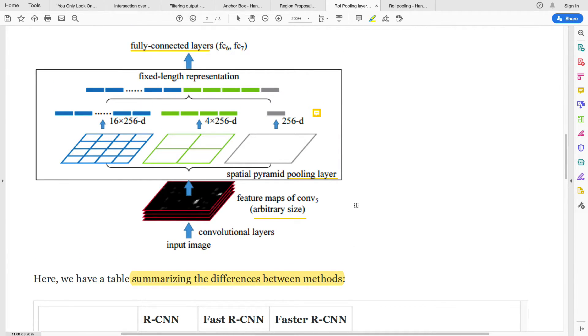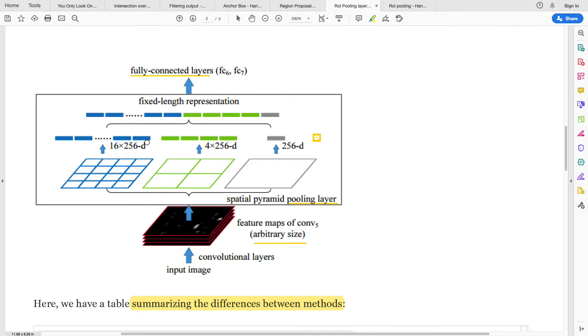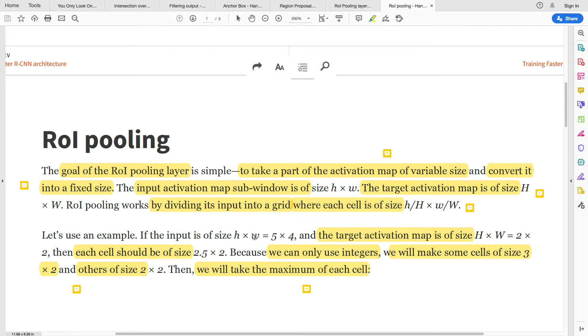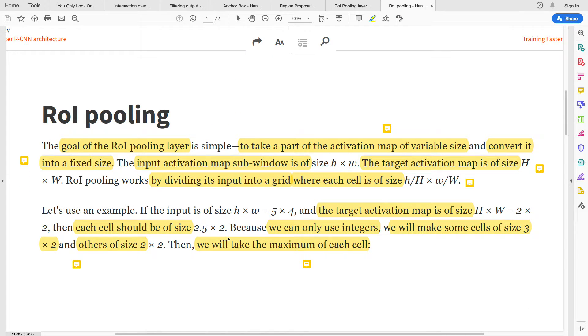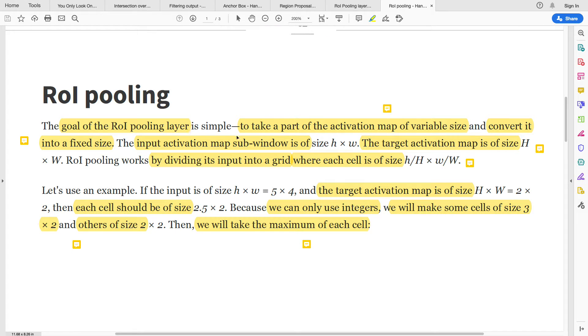In order to be able to fit this into the fully connected layer, we need a fixed length representation. Let's use another resource to better clarify what is happening. The goal of the ROI pooling layer is to take part of the activation map of variable size and convert it into a fixed size.